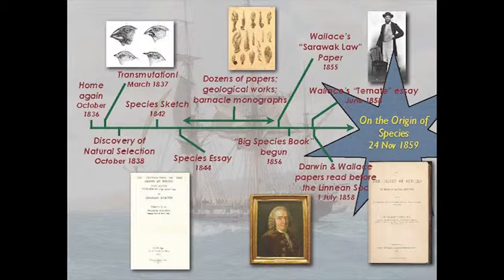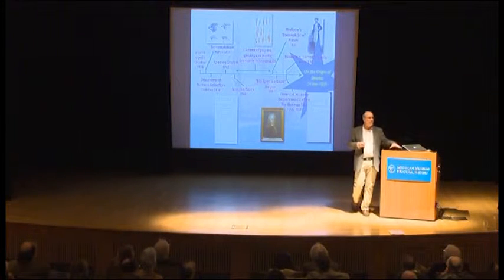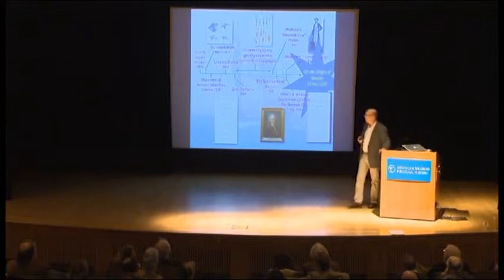In 1858, famously, Wallace's essay on natural selection — conceived in a eureka moment during a malarial fit — is sent to Darwin, precipitating a great crisis. Very quickly the papers are read at the Linnaean Society, and then Darwin is under the gun to come out with his theory. He distills the big book into the abstract, which is On the Origin of Species in 1859.